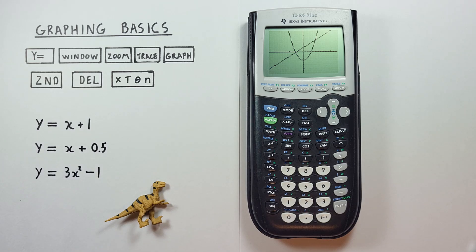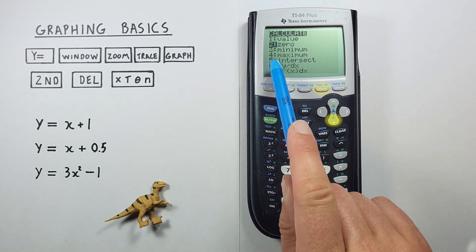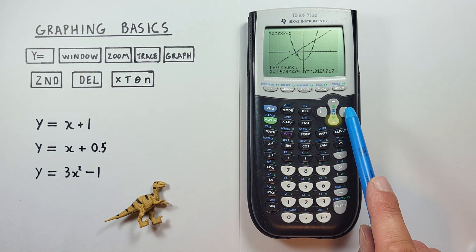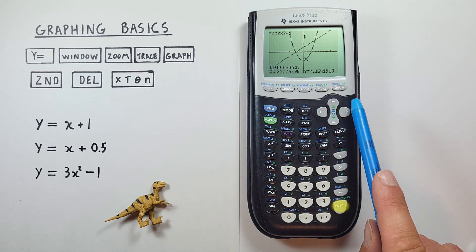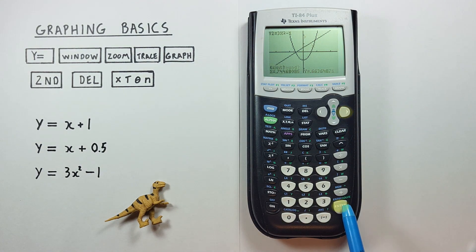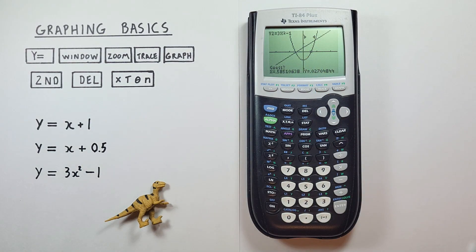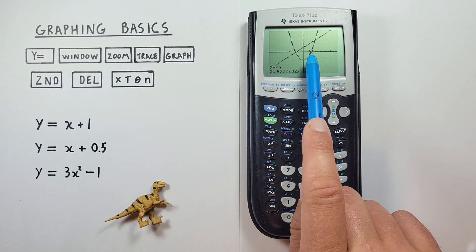We can check the zero on our other function. Again, second trace, choose zero. Let's go down to the second function. We set our left bound there, right bound there, and our rough zero point is right there. It goes ahead and calculates our x value for y equals zero.